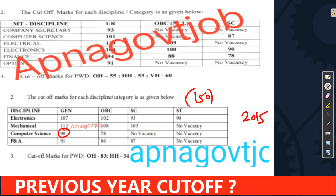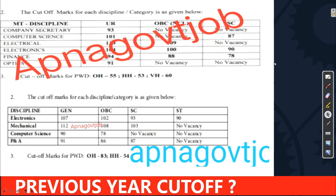In 2017, electrical was introduced. Computer science cutoff was 101 for general, then 90. Electronics was 104. Electrical had a huge cutoff — 119 to 120 out of 150. For OBC it was 109. SC candidates had no vacancy in electrical. Electronics people had OBC 100 and SC 90. This is the data from 2017 and 2015. Definitely this year's cutoff will be increased — there is no surprise in that.